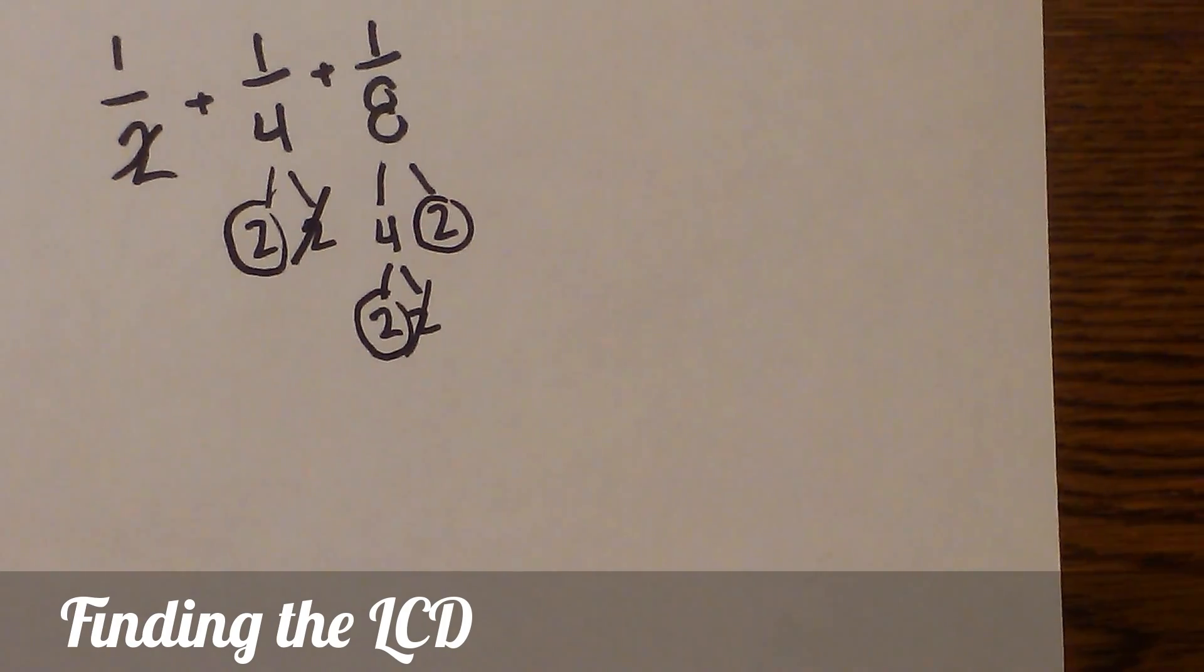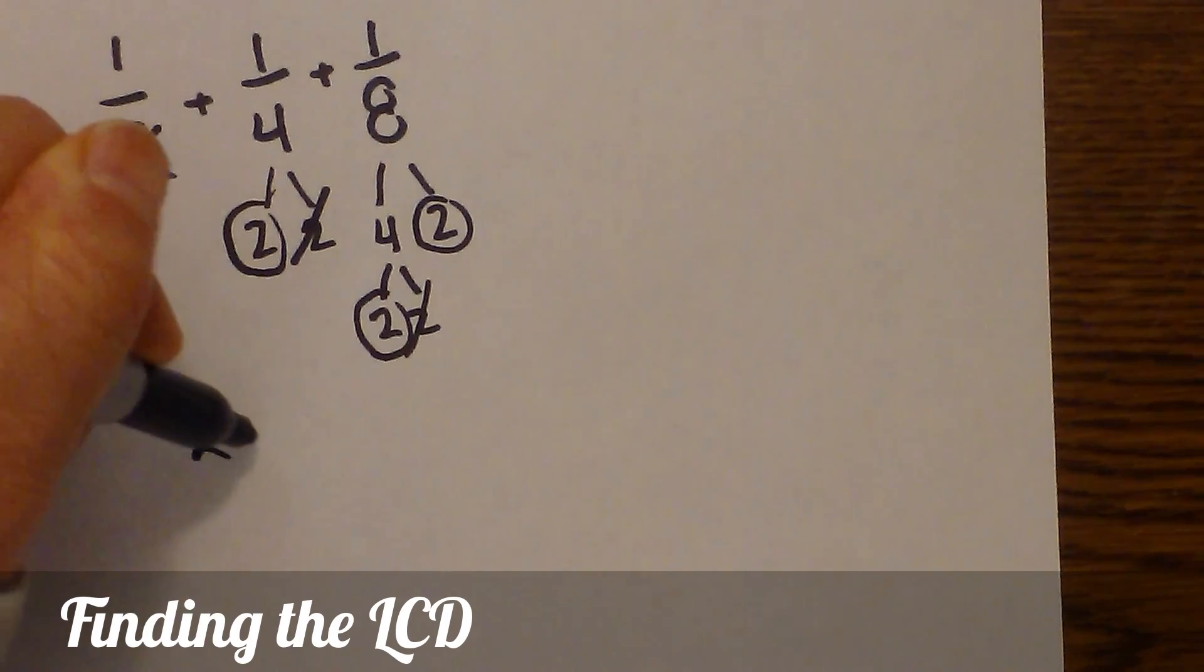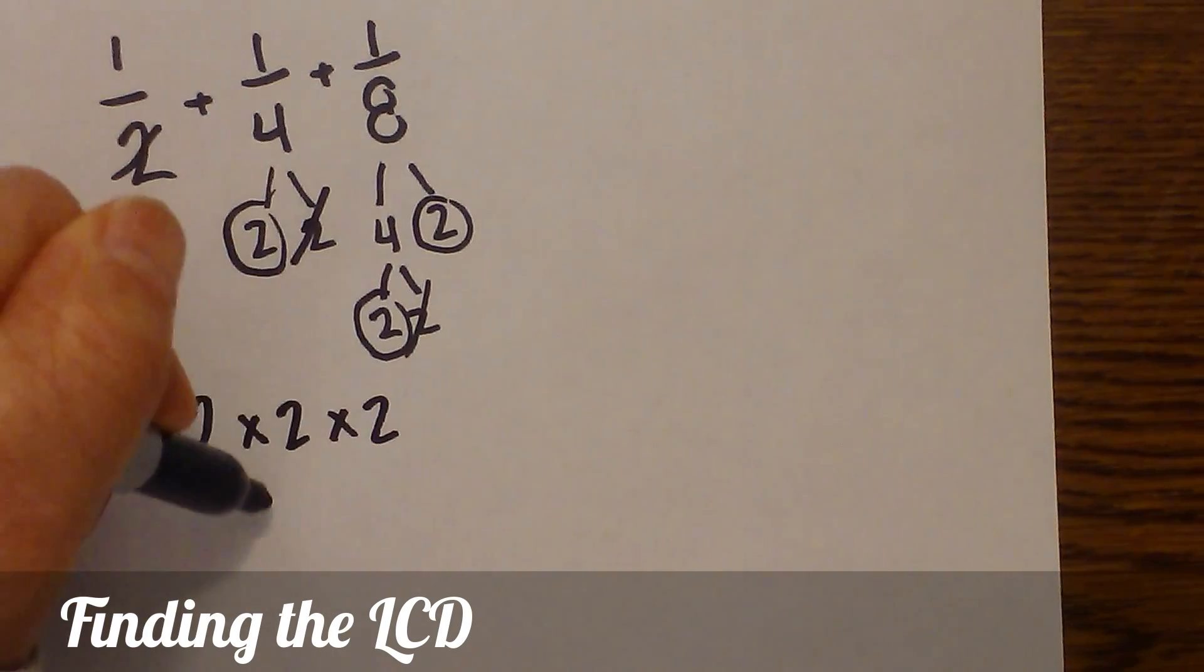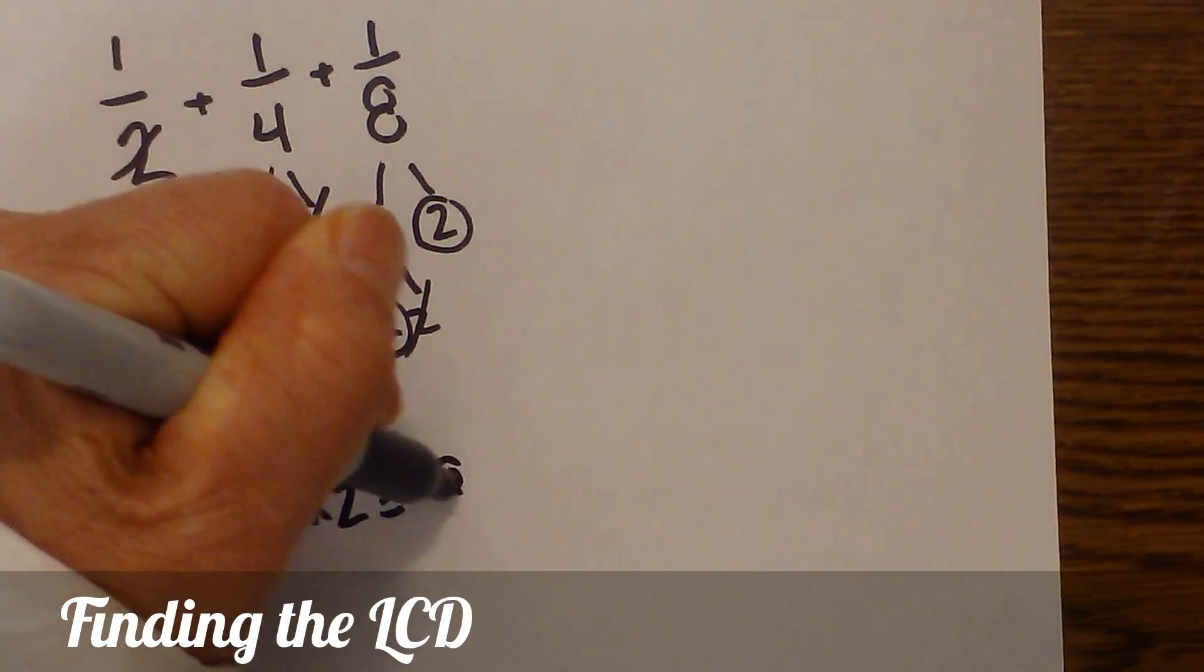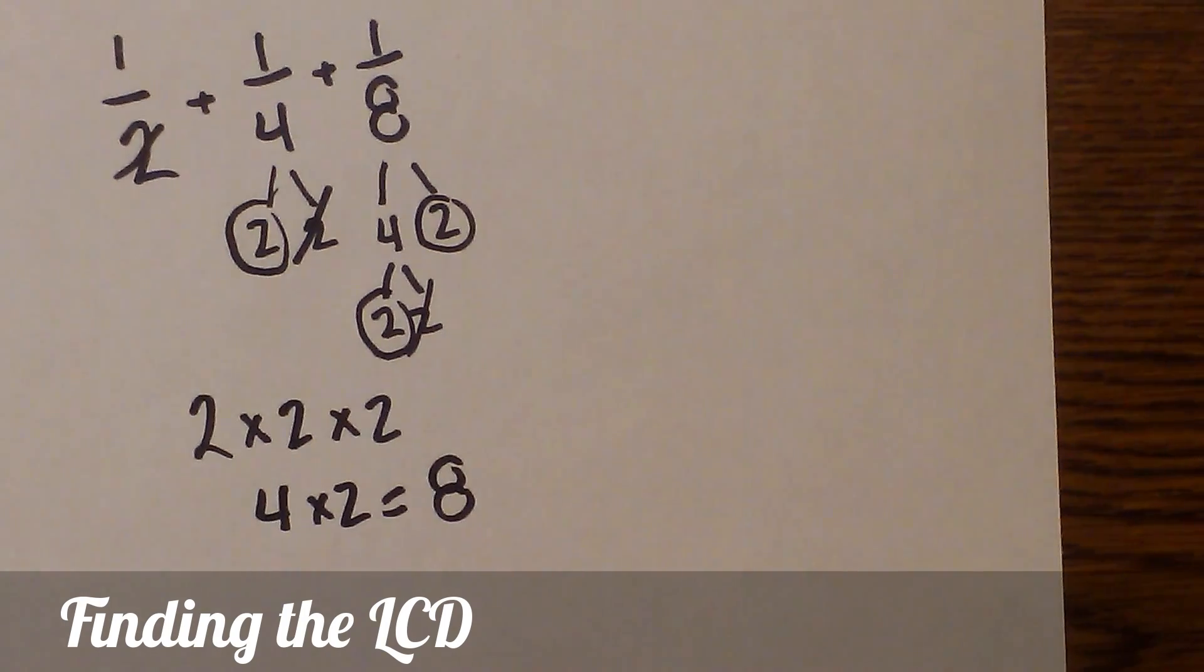Now all the numbers that are circled, to find the common denominator you just multiply them. So you have two times two times two, which is eight. Now I'm aware with these three numbers you can look at them and see that it's eight, but I started with something easy.